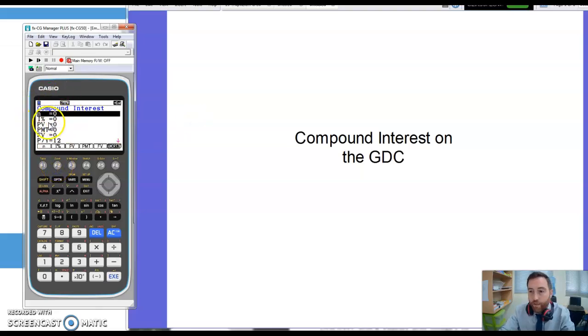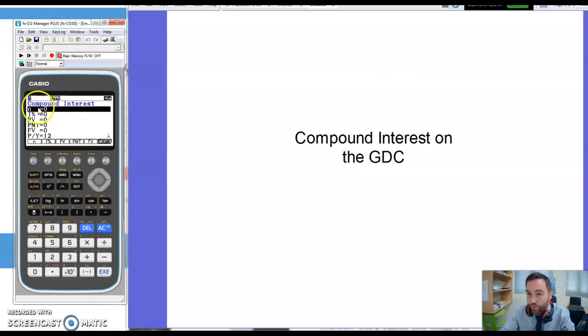Now you'll get all of these options that you need to fill in the details. So let's go through what all of these things mean. N, I%, PV, PMT, FV.